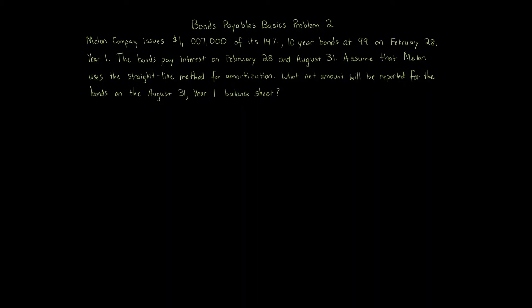Bonds payable basics problem 2. Mellon Company issues $1,007,000 of its 14% 10-year bonds at 99 on February 28th, year 1. The bonds pay interest on February 28th and August 31st. Assuming that Mellon uses the straight-line method for amortization, what net amount will be reported for the bonds on the August 31st, year 1 balance sheet?